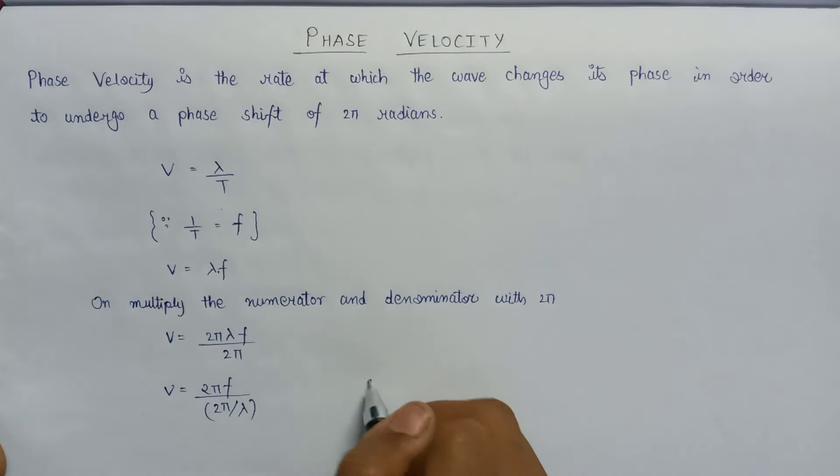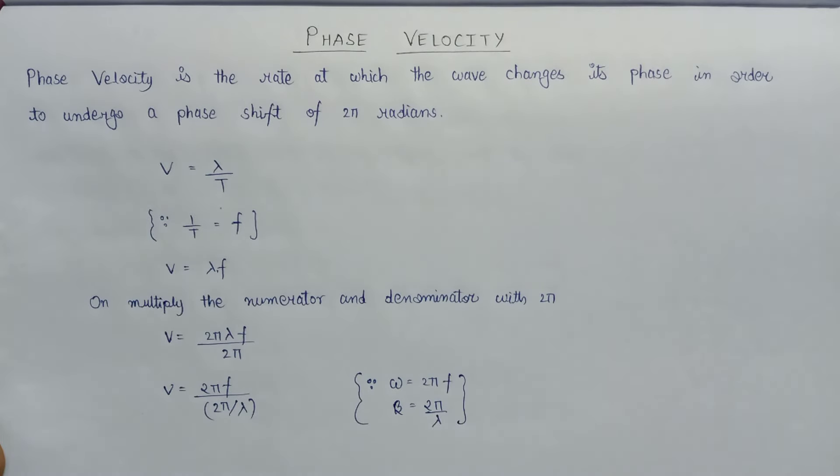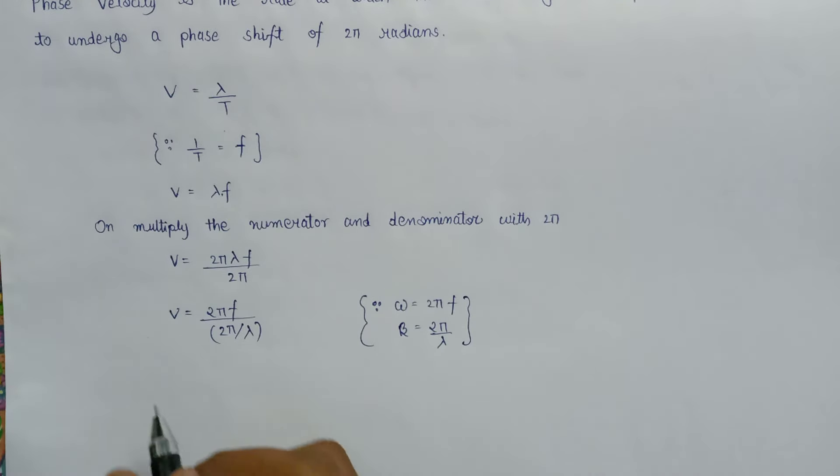Since we know that 2πf equals ω and 2π/λ is the expression for β, on substituting these two values the equation for phase velocity will become v = ω/β.